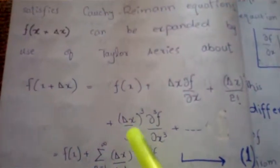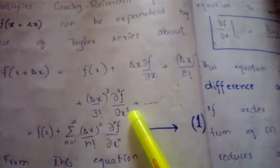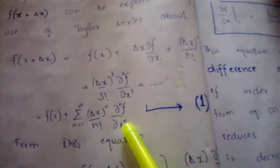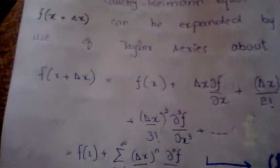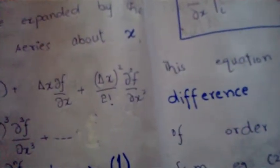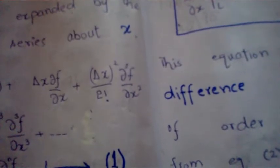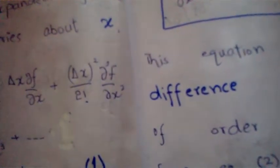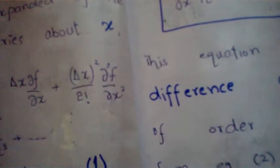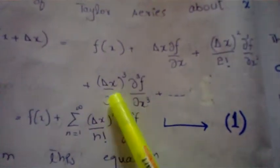The Taylor series about point x is given by the mathematical equation shown, which can also be written in summation form. Specifically: f(x + Δx) = f(x) + Δx · (∂f/∂x) + (Δx²/2!) · (∂²f/∂x²) + the third term and so on. We will name this Equation 1.